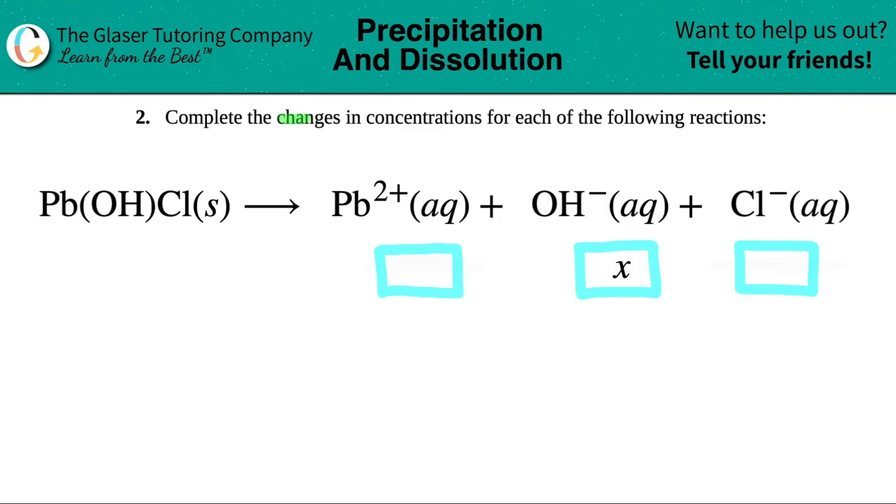Number two, complete the changes in concentrations for each of the following reactions. We have this balanced equation with Pb(OH)Cl solid, which will dissociate or yield into its three ions: Pb2+ aqueous, plus OH- aqueous, and Cl- aqueous.